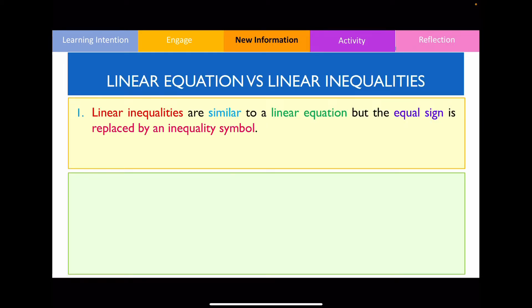Now I want to explain the two differences between a linear equation versus a linear inequality. The first, which is pretty obvious, is that a linear inequality has an inequality symbol rather than an equal sign. Notice in these examples: a linear equation contains equals, whereas a linear inequality will consist of an inequality symbol.